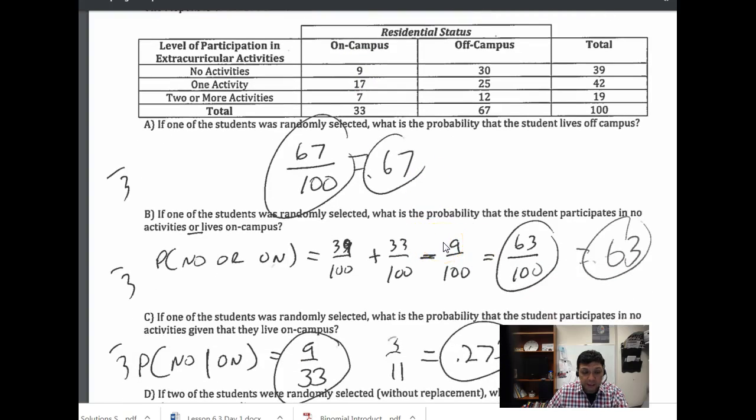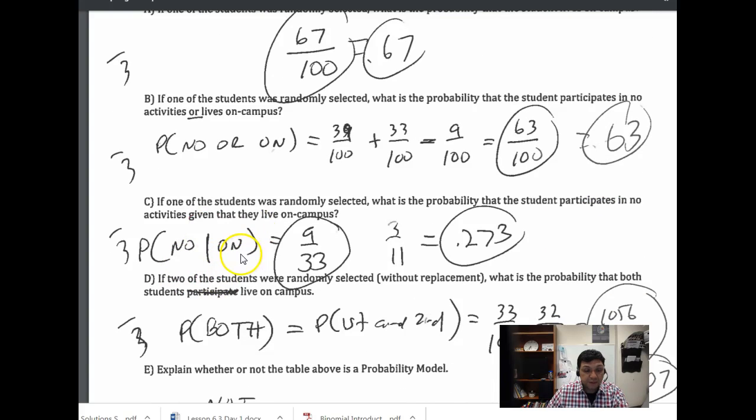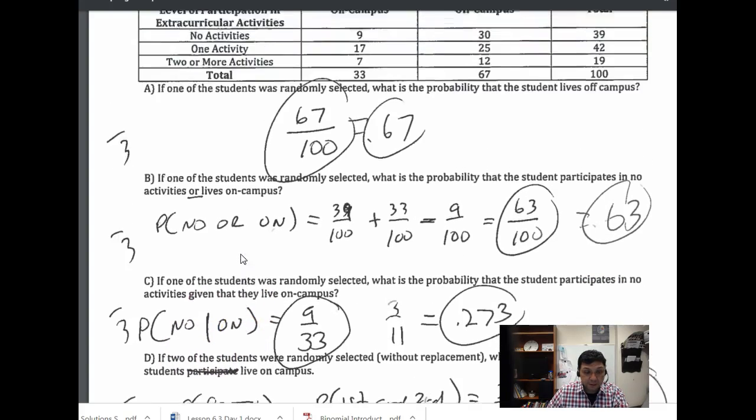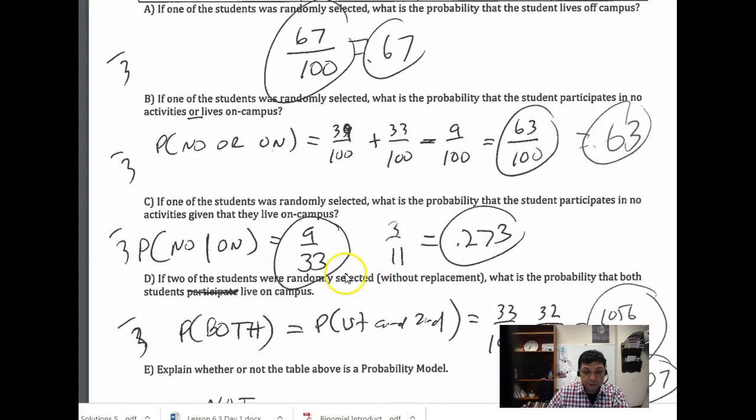Next question, same question but this time it's given: no activities given that you live on campus. In this case our denominator is going to be 33, that's the on-campus part. So you can see we end up with - that's a different question, we're only looking at a different population.